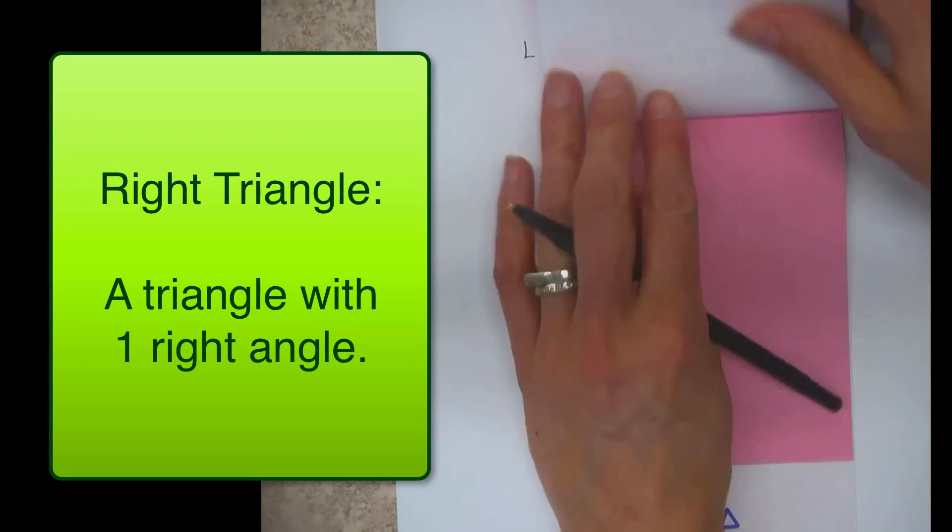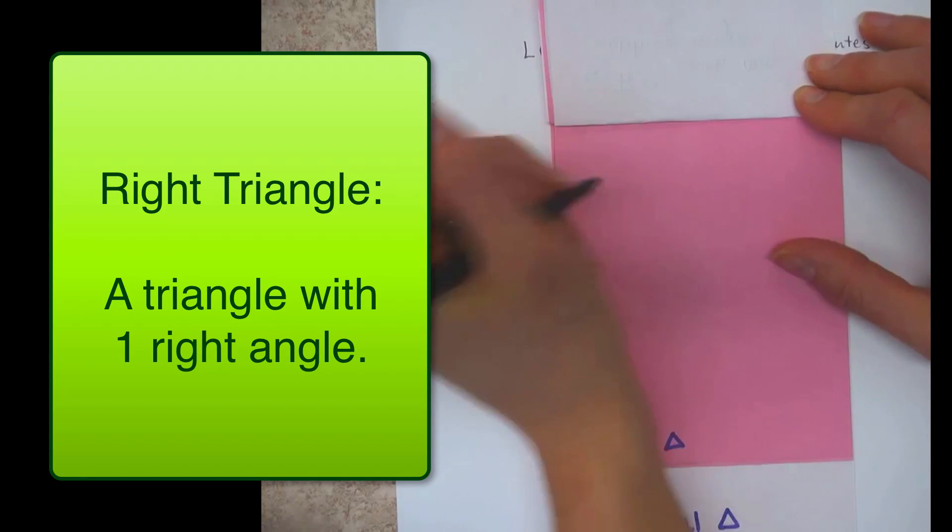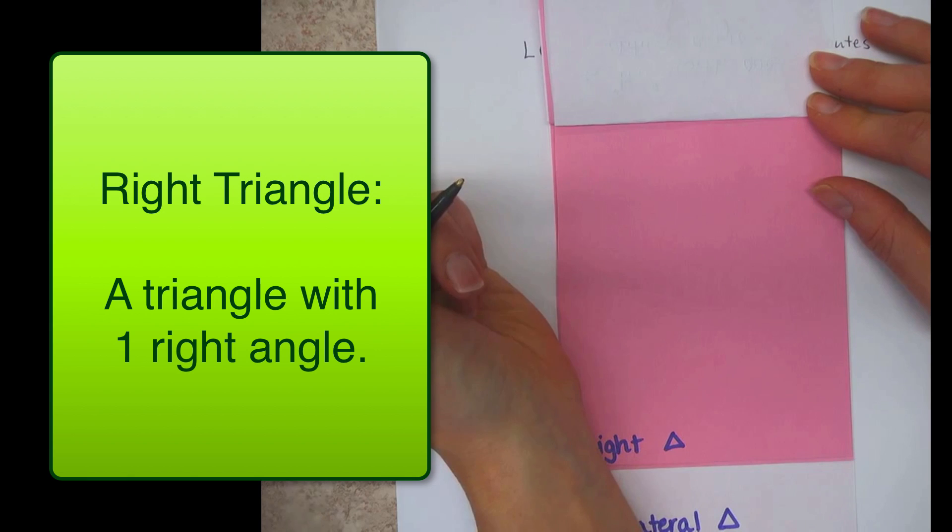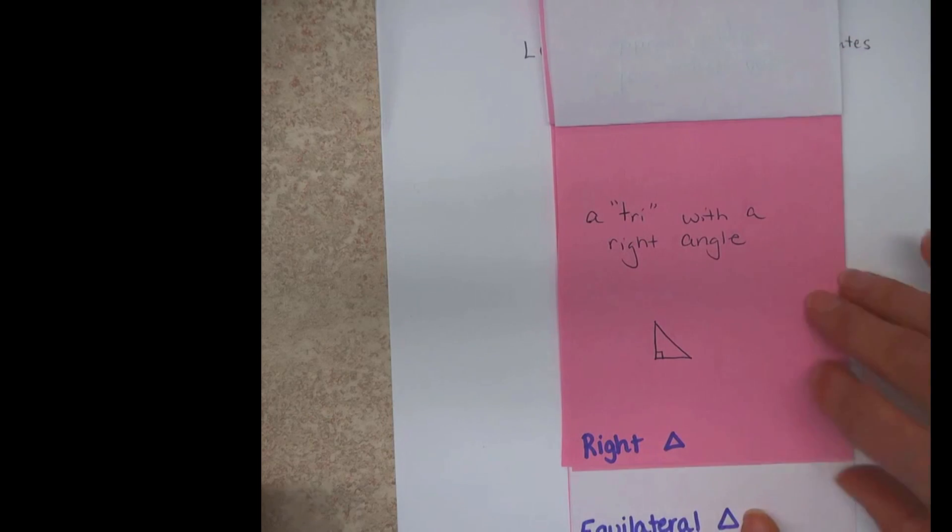So then a right triangle, you can probably guess, is a triangle with one right angle.